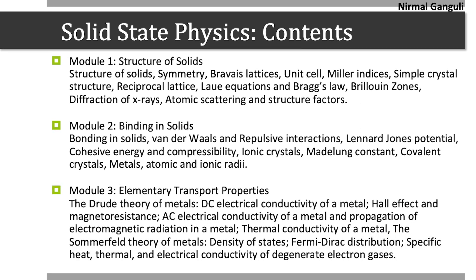The third module covers elementary transport properties of electrons in solids. We begin with the Drude theory for metals, discussing DC electrical conductivity of a metal, Hall effect and magnetoresistance, AC electrical conductivity of a metal and propagation of electromagnetic radiation in a metal, and thermal conductivity. Then we move on to Sommerfeld theory of metals, where we learn about density of states, Fermi-Dirac distribution, specific heat, and thermal and electrical conductivity of degenerate electron gases.